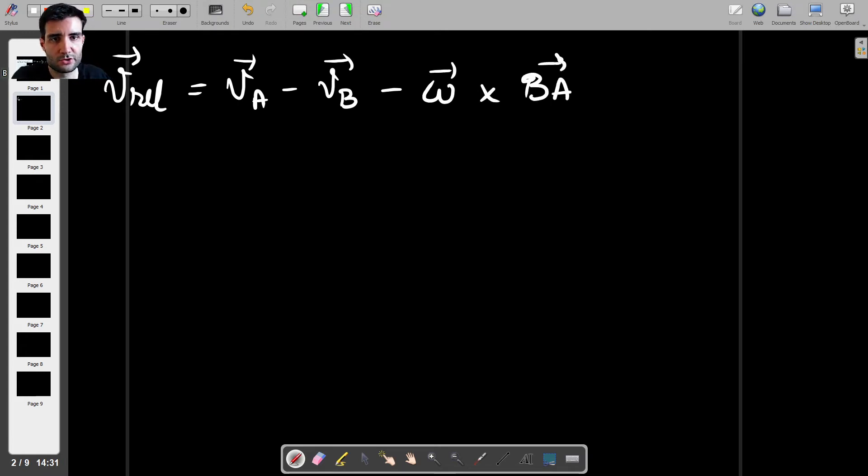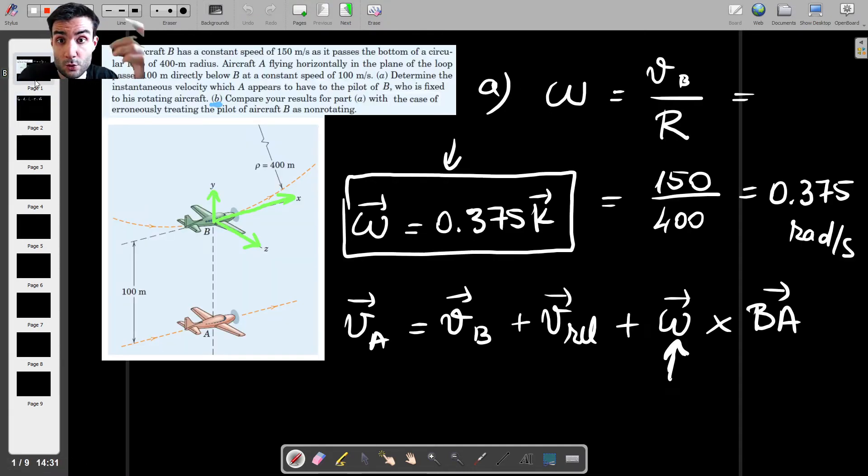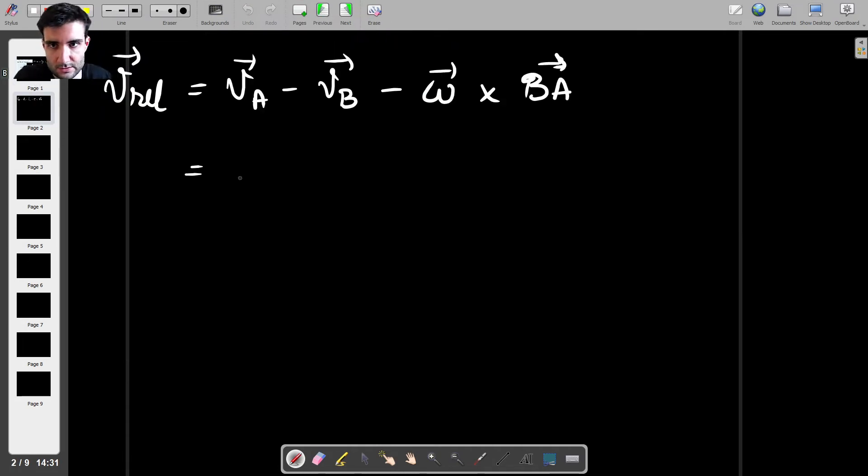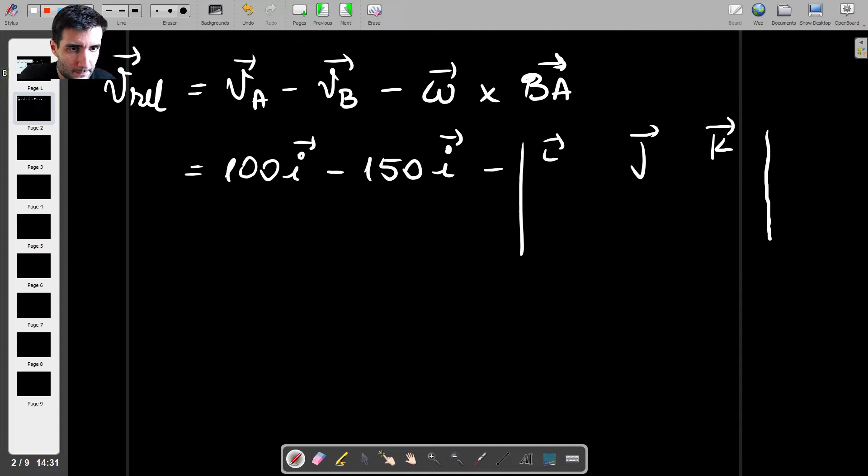So we know every single thing here. So we know that the velocity of A is 100 multiplied by unit vector I, because that's purely in the X direction. And VB, in that case, would be 150I minus, and the determinant, the cross product, is going to be the following. So omega only has a Z component, so everything else is 0, and this is 0.375.